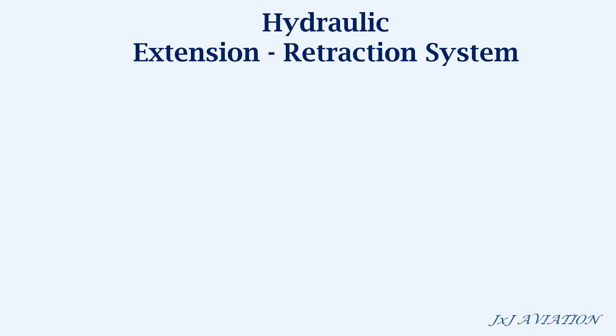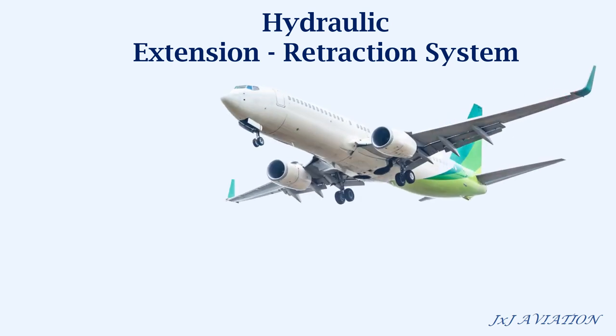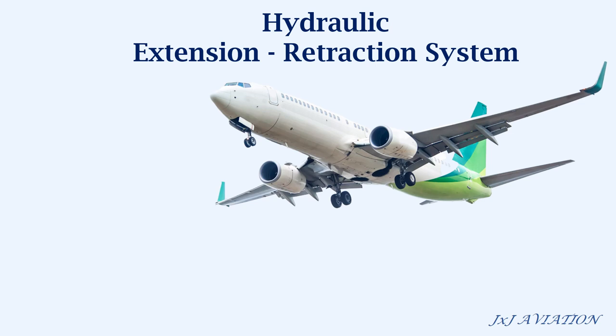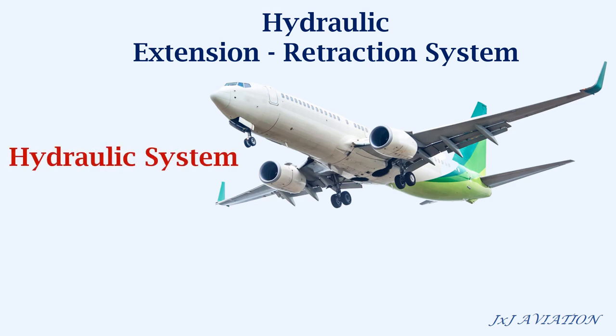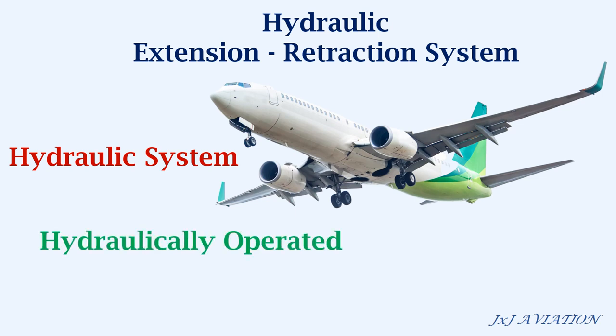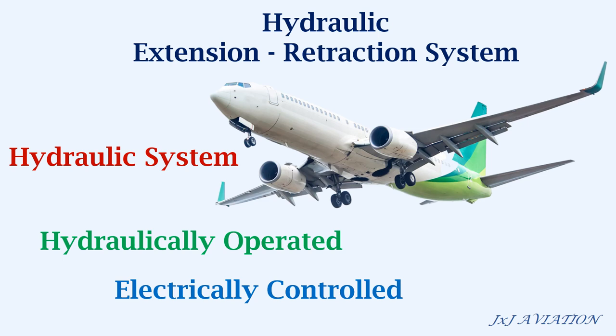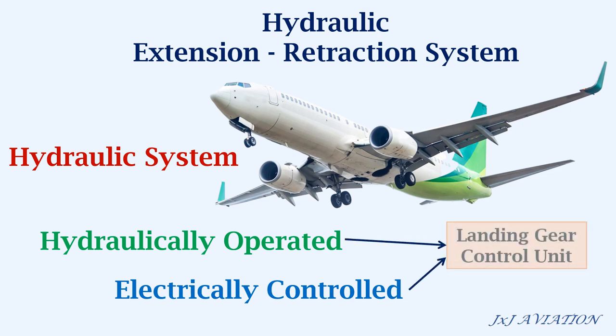Now we will look at a full hydraulic extension and retraction system. This can be found in all large modern commercial aircraft. The aircraft's hydraulic system supplies hydraulic pressure to extend or to retract the gear. In these aircraft, the extension and retraction cycles are hydraulically operated and they are electrically controlled. These are monitored by something called the landing gear control unit.